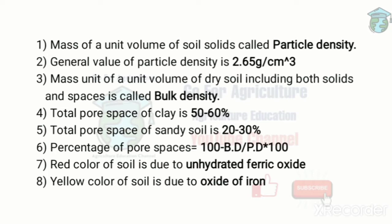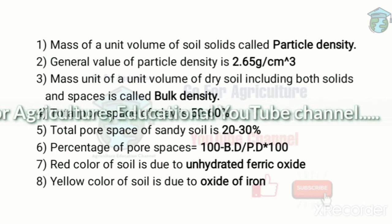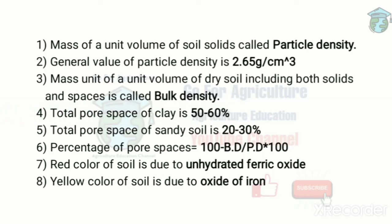The pore space for all soil types: clay is 50 to 60 percent, sandy soil is 20 to 30 percent, and loamy soil is 30 to 50 percent. Pore space is calculated as: percentage of pore space equals 100 minus (bulk density divided by particle density) multiplied by 100.